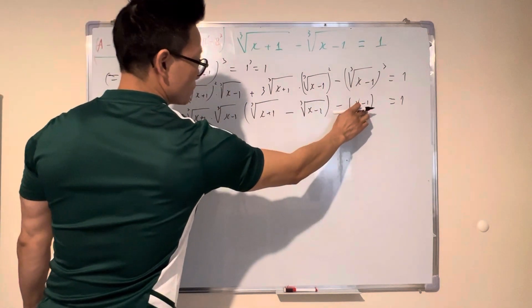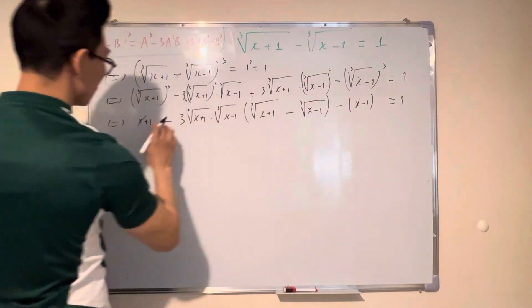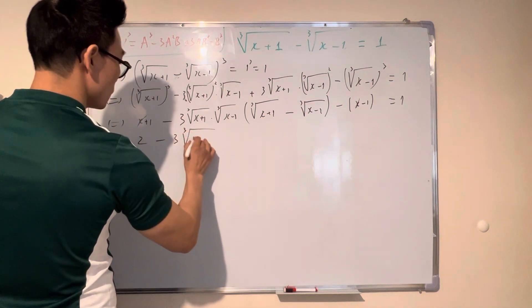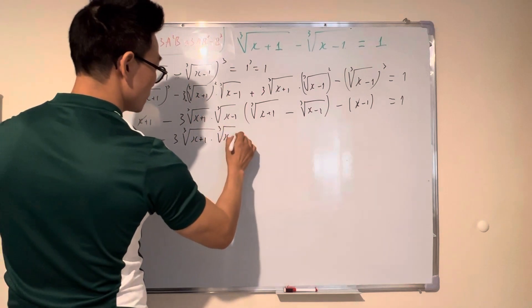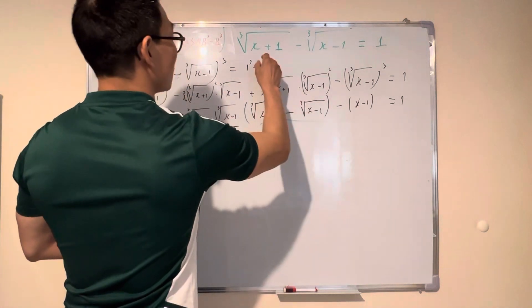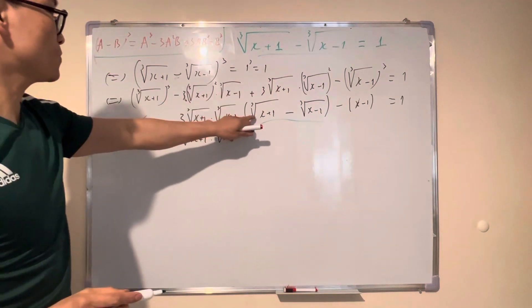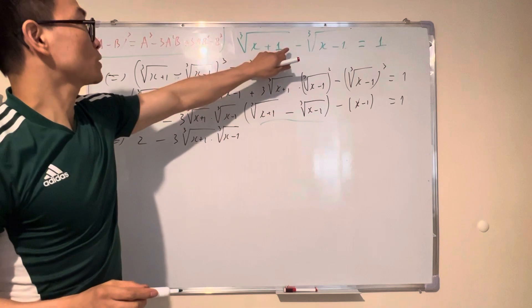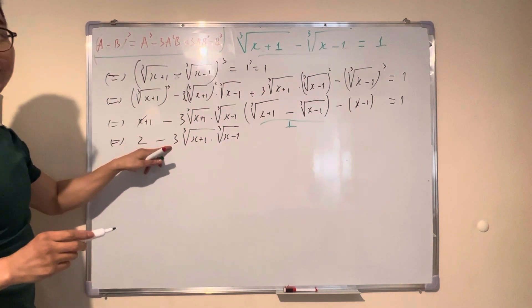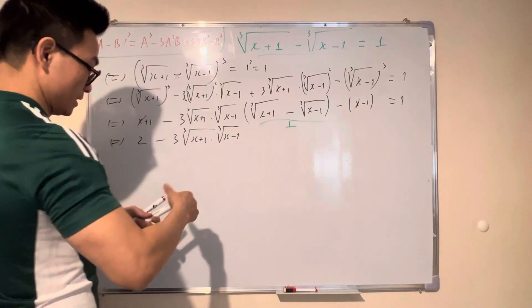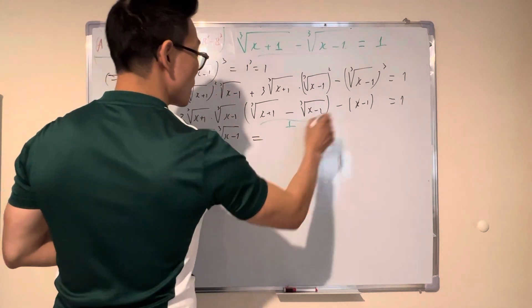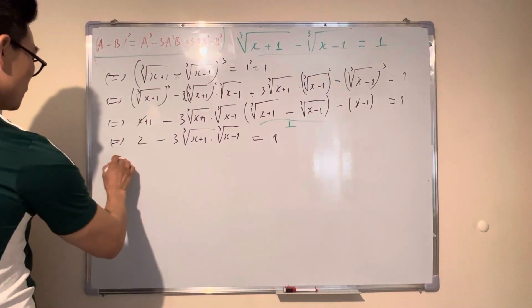Now it's simplified: you can cancel x and x, and negative and negative become positive, so the ones become two. Now take out the factor 3 times cube root of (x+1) times cube root of (x+1). You can see that cube root of (x+1) times cube root of (x+1) equals one, so that term equals one, and one times 3 equals 3.